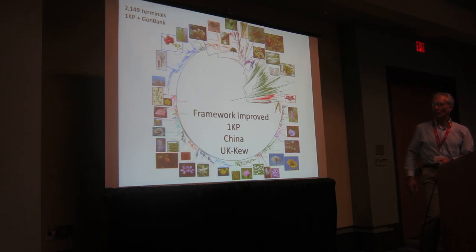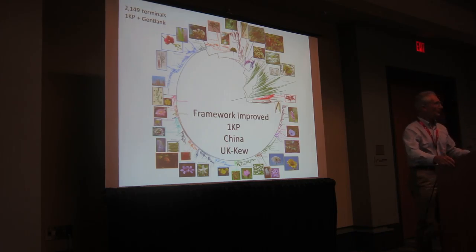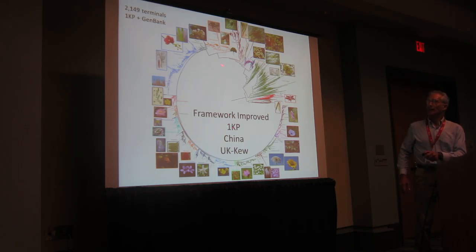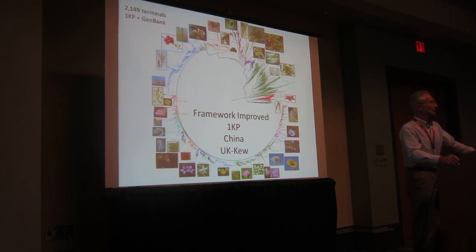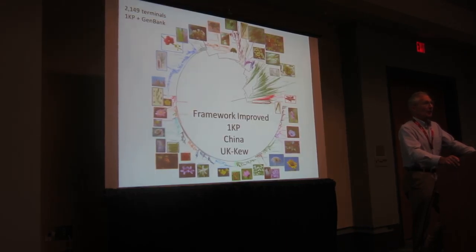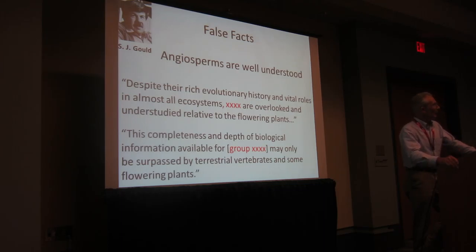Our understanding of the angiosperm framework has been bolstered by projects like the 1KP — 1,000 plant transcriptomes — and lots of plastome sequencing in China. Our lab generated a plastid tree with 1KP data for over 2,000 green plants, about 1,000 of which are angiosperms. But again, that is the angiosperm framework, and what we have, I think, is a false fact — because the framework of the angiosperms is well understood, people think angiosperms in general are well understood.